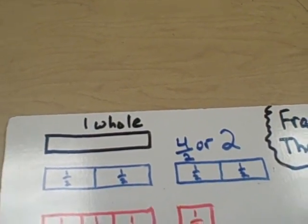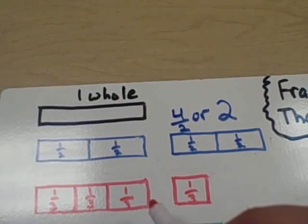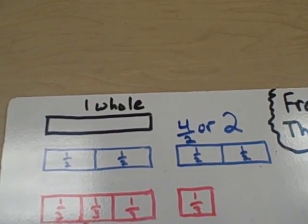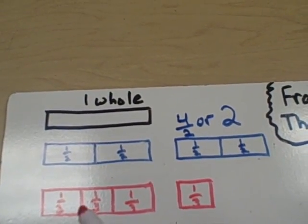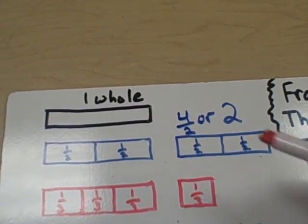Now let's look at the red one. Okay, we agreed that this is one whole right here, and we also said that three thirds make a whole. So let's count the thirds. One third, two thirds, three thirds, four thirds.